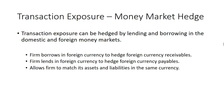Let's take a look at how a firm can manage transaction exposure using a money market hedge. Basically, what the firm is going to do is lend and borrow in the domestic and the foreign money markets. A firm borrows in the foreign currency to hedge foreign currency receivables, and lends in foreign currency to hedge foreign currency payables. This allows the firm to match its assets and liabilities in the same currency.